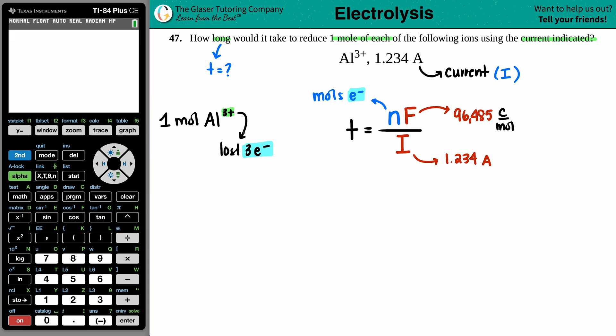So for every one aluminum ion that's being made, you're losing three electrons, because the three is in that upper right-hand corner. And now, how many moles of electrons for every one aluminum? Your n value would be three. So we have that number.